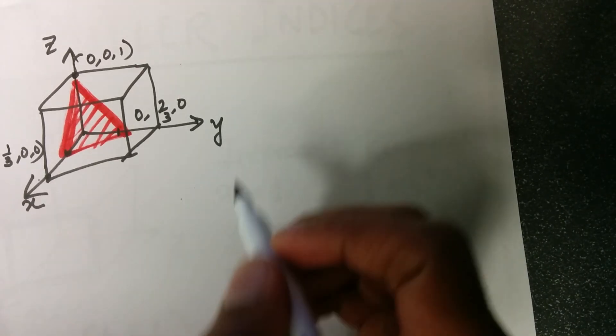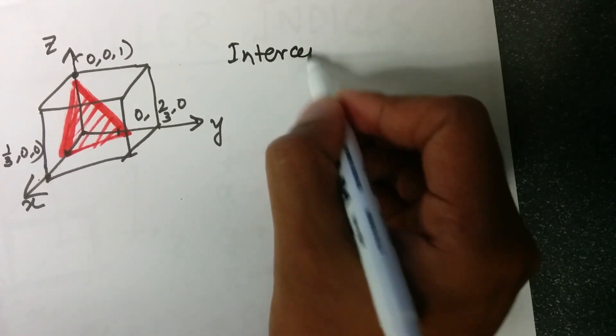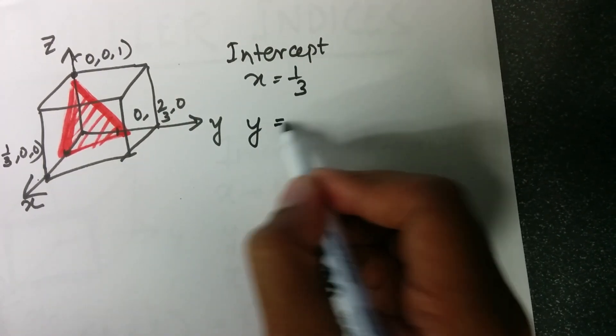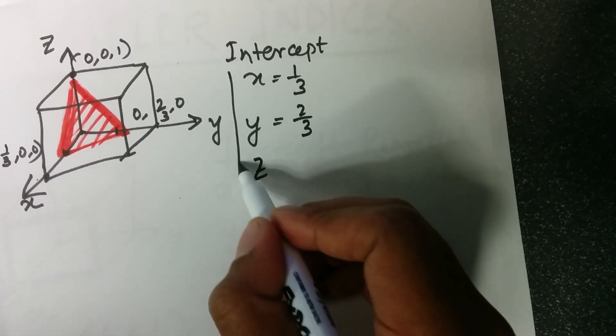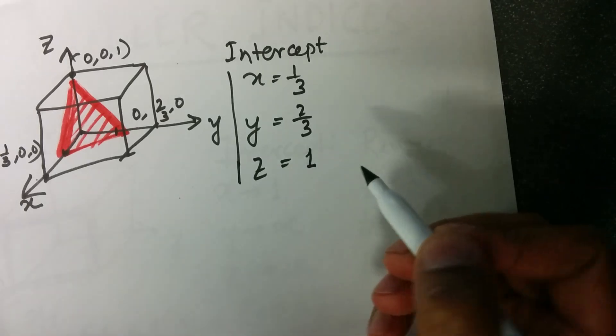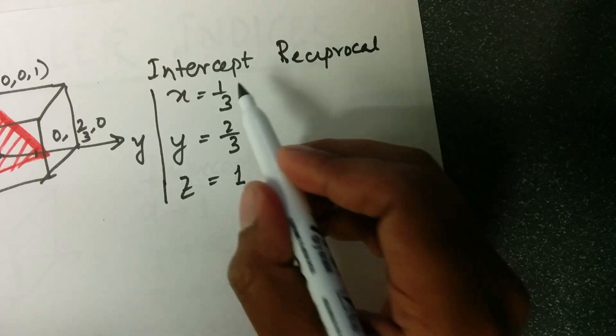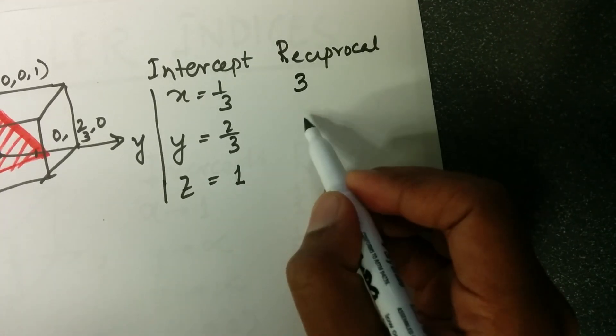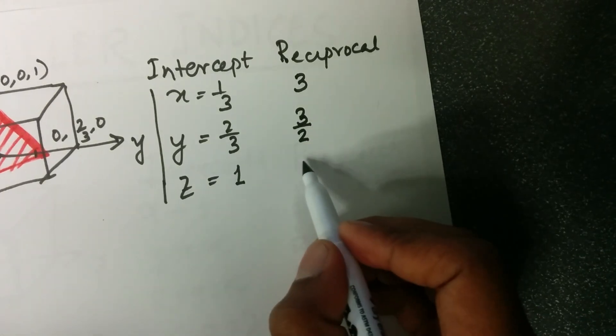The procedure to be followed here is similar. The x is 1/3. On y, the intercept is 2/3. On z, the intercept is 1. The reciprocal for x is reciprocal of 1/3, or 3. For y, reciprocal of 2 by 3, which is 3 by 2. And for z, it is 1.